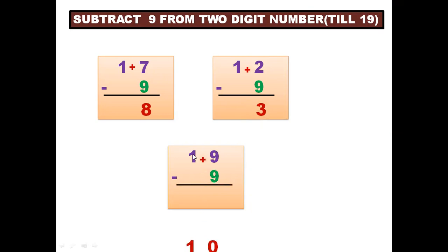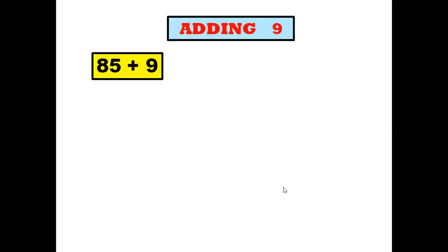Now let us see adding 85 plus 9. You don't need to add it directly. What you can do is first add 10, then subtract 1, because 10 minus 1 is 9. So let's start: first we'll add 10 with 85, so 85 plus 10 is 95, and then we subtract 1 to get 94.